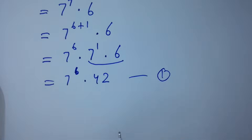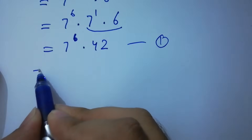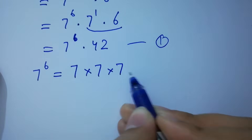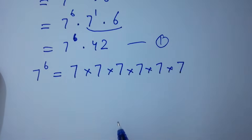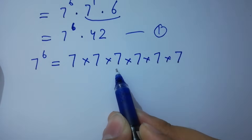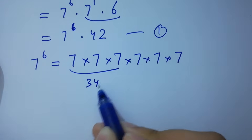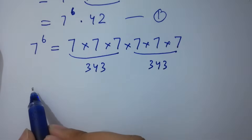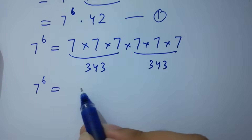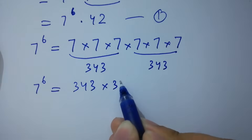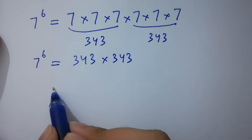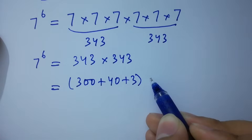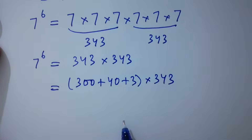Let this be the first equation. First of all I'm going to solve 7 to the power 6, which is 7 multiplied 6 times: 7 times 7 is 49, 49 times 7 is 343, and also 343. So 7 to the power 6 equals 343 times 343. It can be written as 300 plus 40 plus 3, times 343.